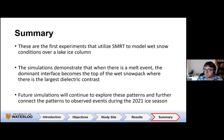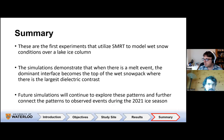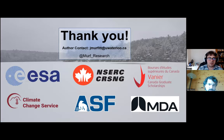Overall, these are the first experiments using SMRT to model wet conditions over a lake ice column — very important for slush conditions and freeze-melt events in midwinter, increasingly seen at Arctic latitudes but common in mid-latitudes. Simulations demonstrate that during a melt event, the dominant interface becomes the top of the wet snow layer, where there is large dielectric contrast. This applies to both saturated and semi-wet layers. Future work will more closely tie modeling results to field data events. Thank you.